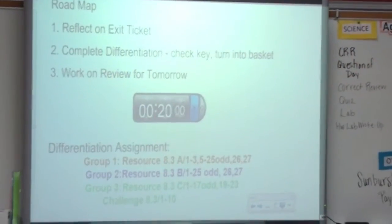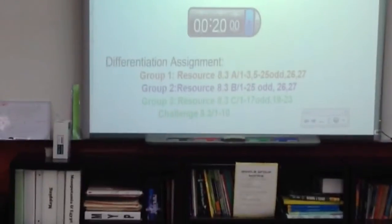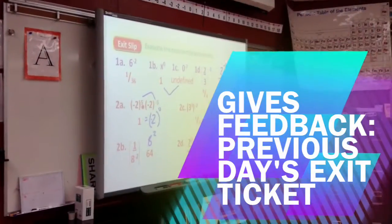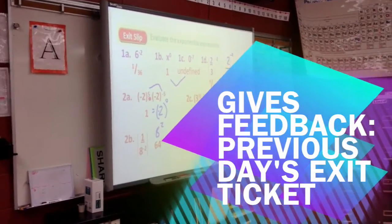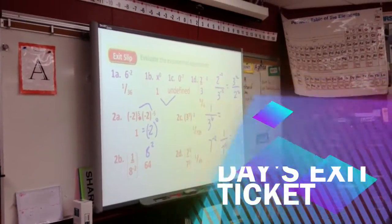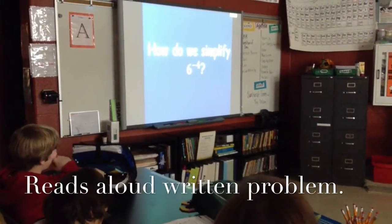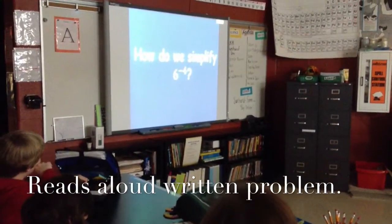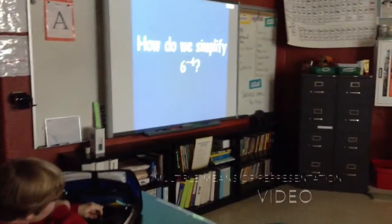Students are given a road map at the beginning of the lesson so they know what's coming up in the lesson. During this part of the lesson, the students check their exit slip from the previous day. The question they are trying to solve is: how do we simplify six to the negative fourth power?